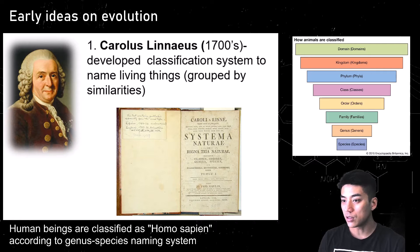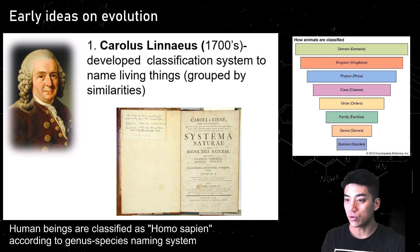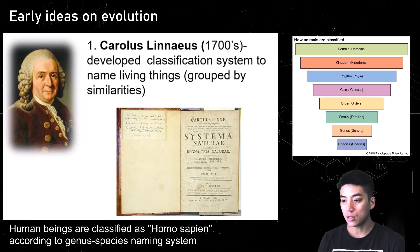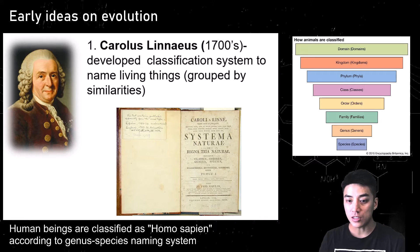In the picture above my head, you can see how animals are classified and you have these different levels. The broadest level would be domain, followed by kingdom, phylum, class, order, family, genus, and species. There's a mnemonic device that can help you memorize that: 'Kings play chess on fat green stools' — kingdom, phylum, class, order, family, genus, species.